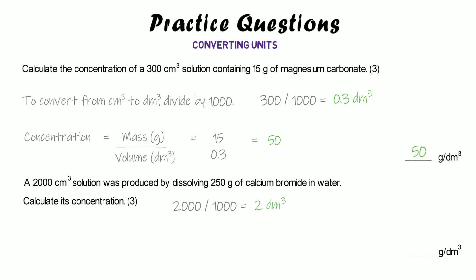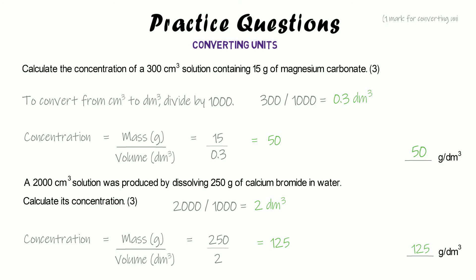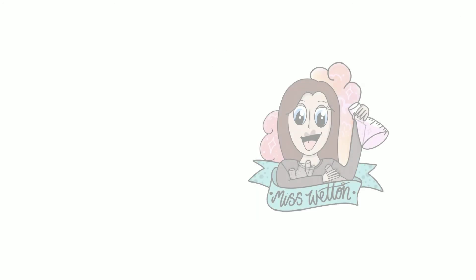For the second question, 2000 cm³ divided by 1000 gives 2 dm³. Concentration equals mass divided by volume: 250 grams divided by 2 dm³ equals 125 grams per decimetre cubed. These are three-mark questions: one mark for converting to dm³, one for working out, and one for the correct answer. If you forget to convert you'll still get the other two marks.